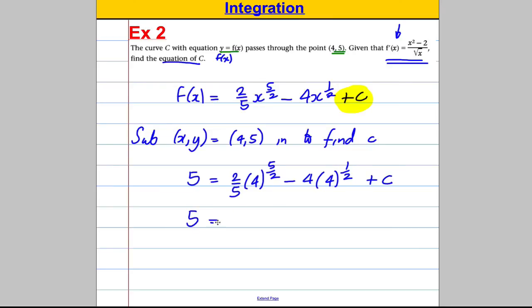I'm going to say 5 is equal to 2 fifths, 4 to the power of 5 over 2, take away 4, 4 to the power of 1 half, plus c. 5 is equal to, I'm going to keep the 2 fifths there for now, and I'm going to write this as 4 to the half to the 5. Take away 4, 4 to the half is square root 4, which is 2, plus c.